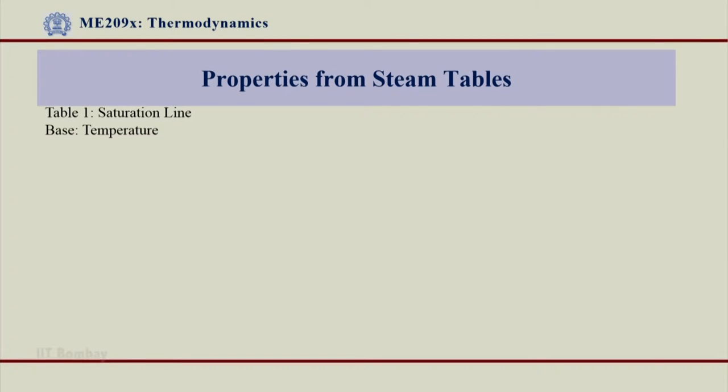Welcome back. We had seen Table 1 and Table 2, but till now we had not looked at the properties from the steam table. What we saw were only the first two columns, where temperature was the base or the pressure was the base — Table 1 has temperature as the base, Table 2 has pressure as the base. Now let us look at the properties from the steam tables.